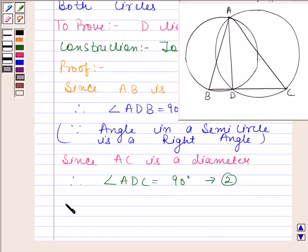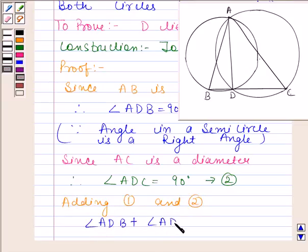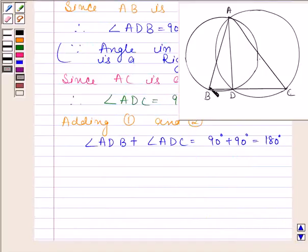On adding 1 and 2 we get angle ADB plus angle ADC is equal to 90 degrees plus 90 degrees, and this is equal to 180 degrees. So as angle ADB plus angle ADC is equal to 180 degrees, therefore BDC is a straight line.